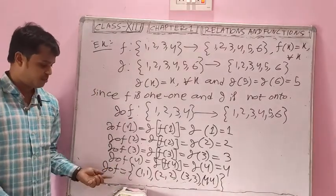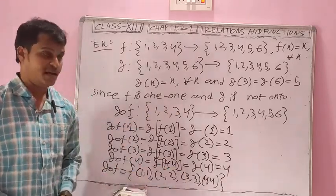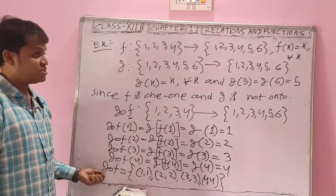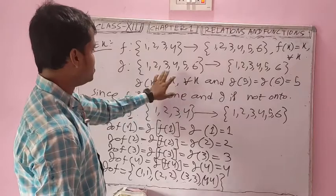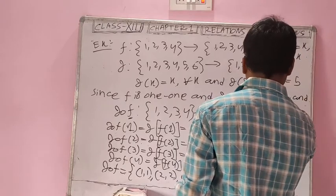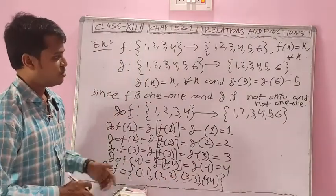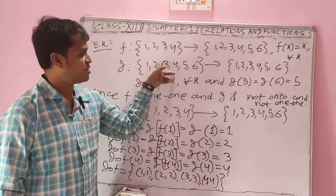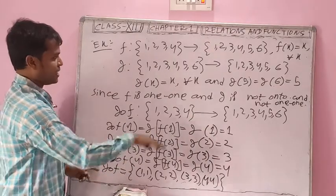G∘F has different images for different domain elements, so G∘F is one-one. F is also one-one. But G is not one-one, because 5 and 6 are two different elements in the domain of G having the same image. This is the example where G∘F is one-one, F is one-one, but G is not one-one.